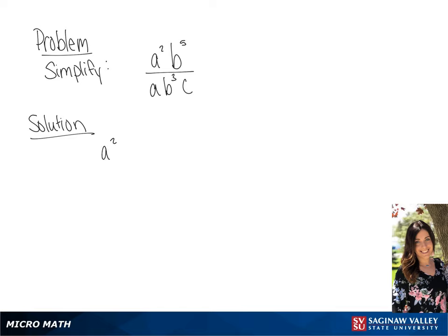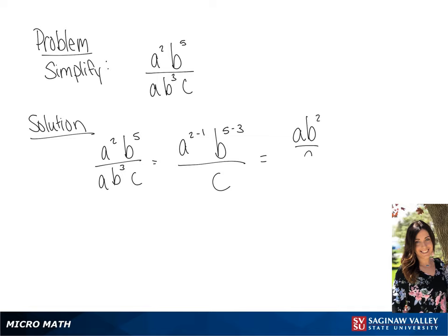We have a squared b to the fifth power all over a b cubed c. The bases that are alike, we can subtract their exponents. So we have a to the power of 2 minus 1 and b to the power of 5 minus 3, all over c. So our final answer is going to be a b squared over c.